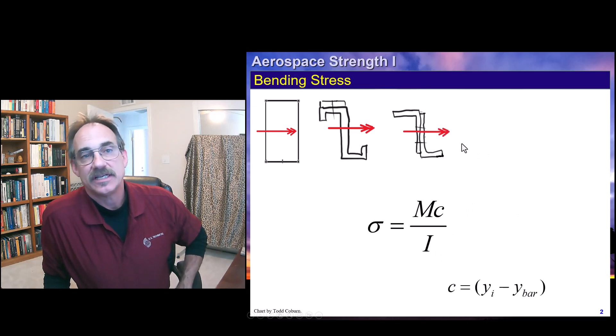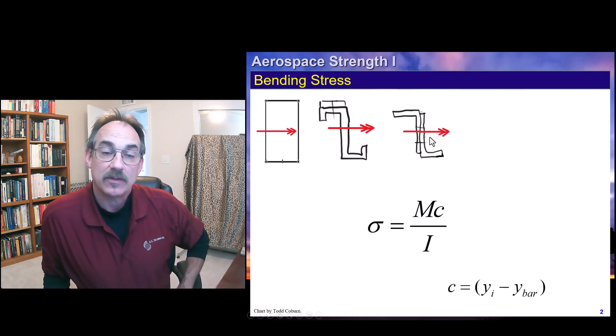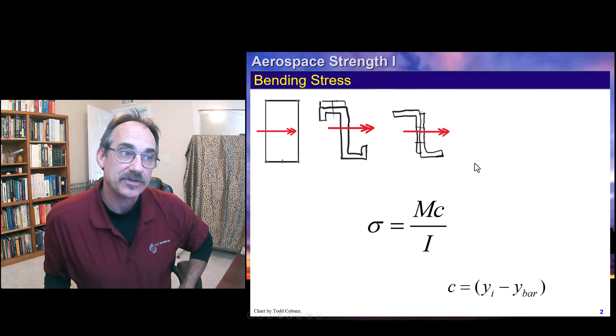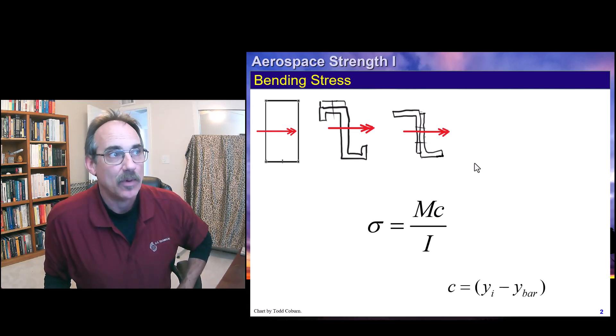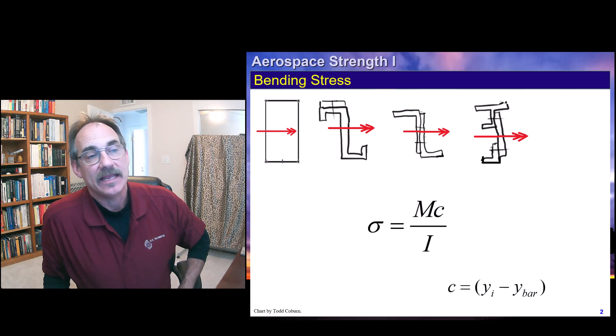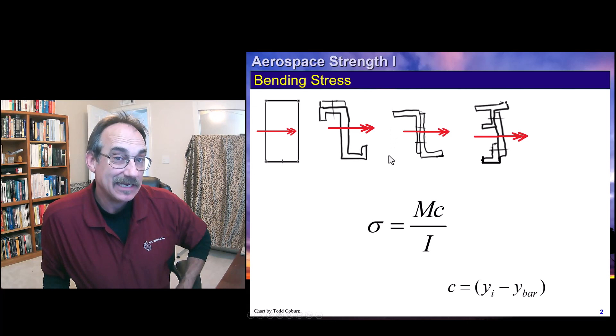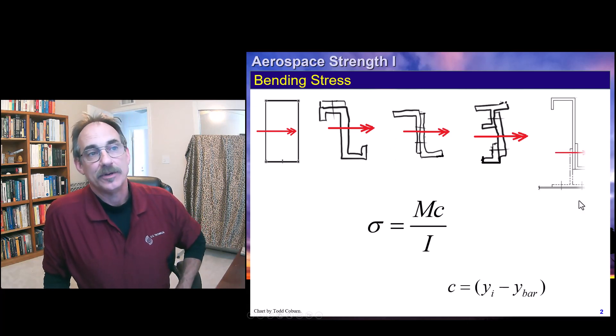Another more complicated section is this one. Once again, these are fastened together. We can treat it as one if the two materials are the same. mc over i will give you the stress at any point. And same thing here, mc over i. Treat these two facets as being sufficient until we learn how to deal with those. And that's how we do it.